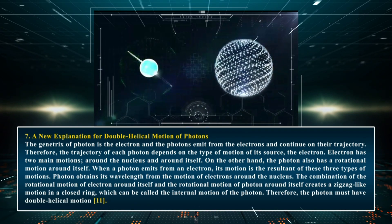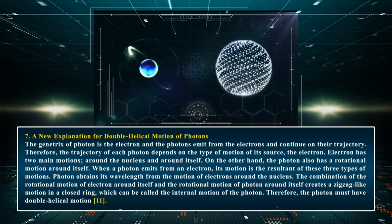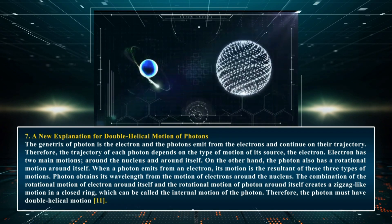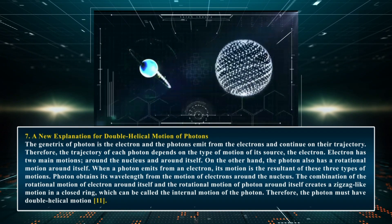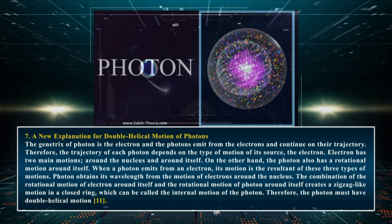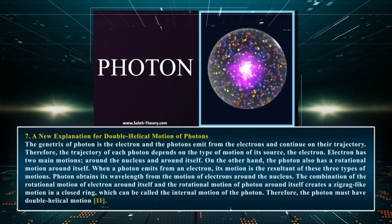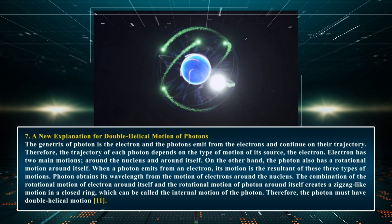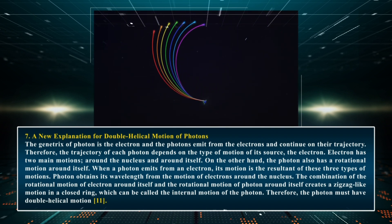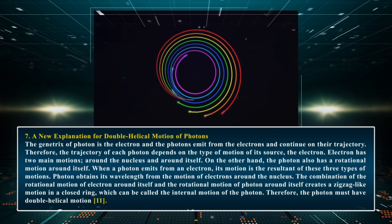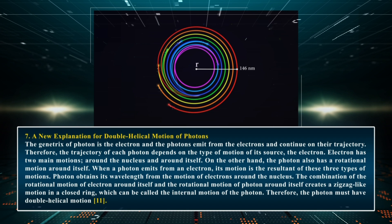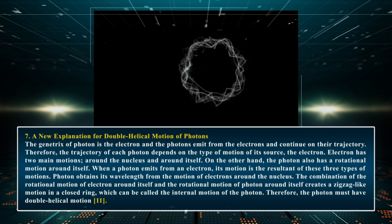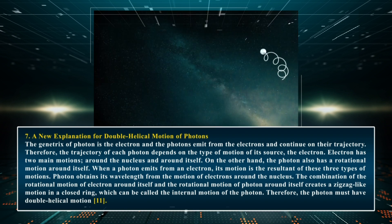A new explanation for double helical motion of photons. The genetics of a photon is the electron — photons emit from electrons and continue on their trajectory. Therefore, the trajectory of each photon depends on the type of motion of its source, the electron. The electron has two main motions: around the nucleus and around itself. The photon also has a rotational motion around itself. When a photon emits from an electron, its motion is the resultant of these three types of motions. The photon obtains its wavelengths from the motion of electrons around the nucleus. The combination of the rotational motion of the electron around itself and the rotational motion of the photon around itself creates a zigzag-like motion in a closed ring, which can be called the internal motion of the photon. Therefore, the photon must have double helical motion.